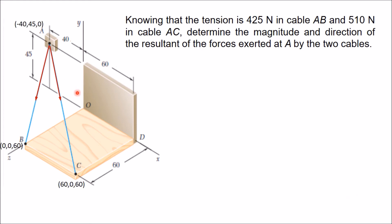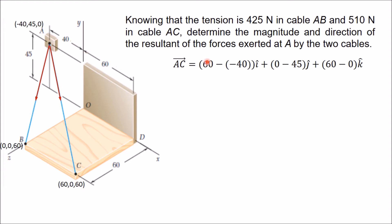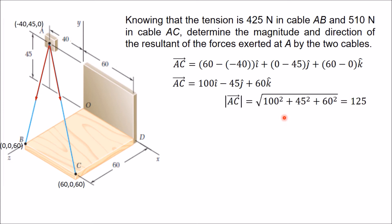In the same manner, we determine the tension in cable AC. First, compute vector AC as coordinates of C minus coordinates of A, which gives 100i − 45j + 60k. The magnitude of AC is the square root of 100² + 45² + 60², which equals 125.